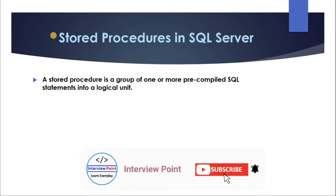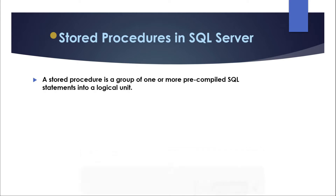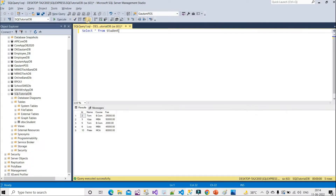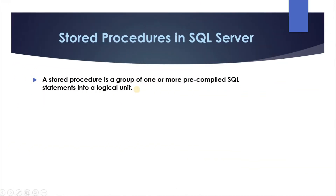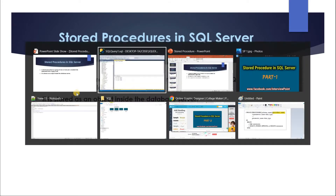A stored procedure is nothing but a group of one or more pre-compiled SQL statements into a single logical unit. Suppose we have a SQL statement like SELECT * FROM Student, an INSERT query, and an UPDATE query — we can put one or more SQL statements into a single logical unit. It is stored as an object inside the database server.